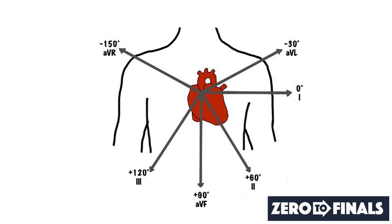Now let's have a look at how this plays into the ECG. For the purpose of the axis, only the limb leads are important — you can forget about the chest leads. There are four limb leads: one sits on the right shoulder, one on the left shoulder, one on the left ankle, and one on the right ankle. The leads — lead one, two, three, AVL, AVF, and AVR — are calculated by looking at the difference in electrical activity between two of these leads.